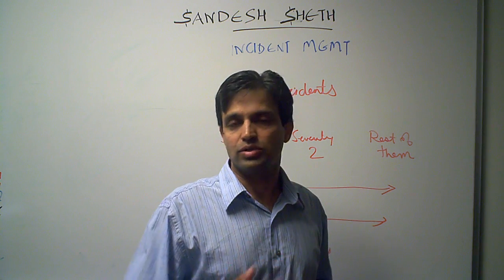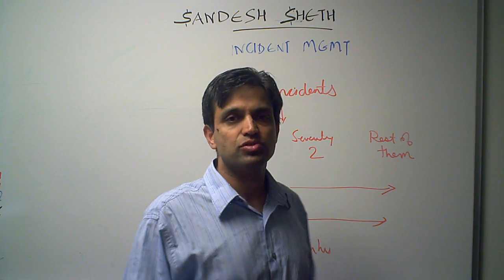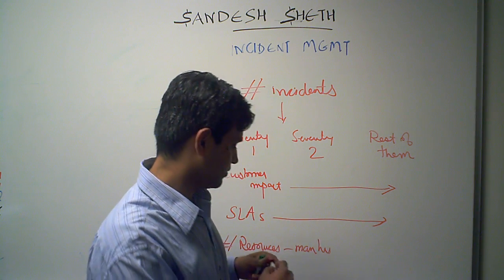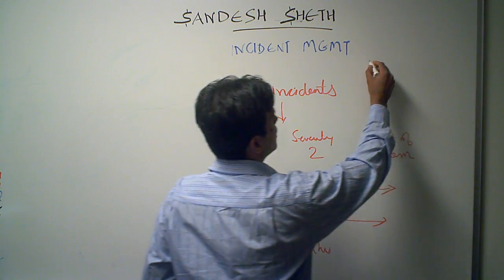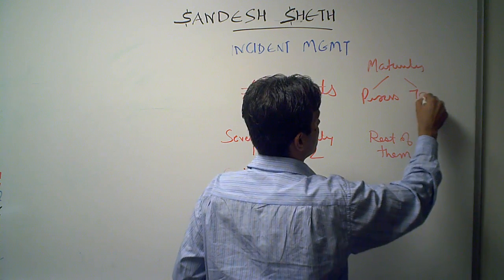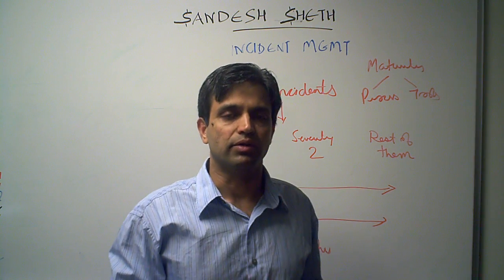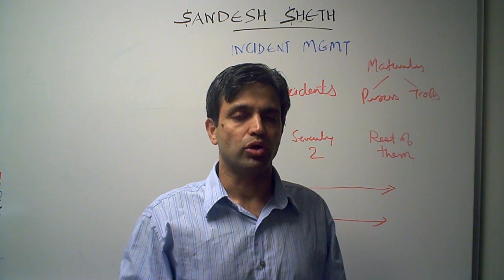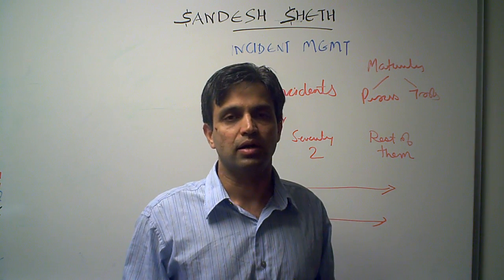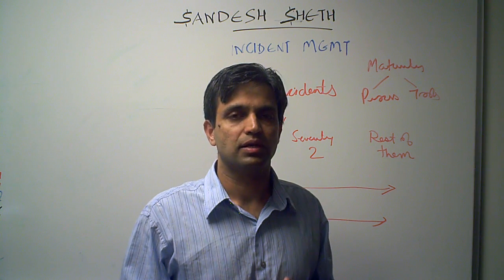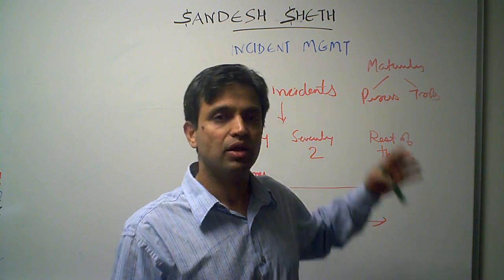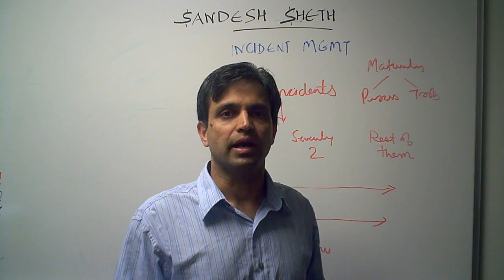In addition to this, what is common across all processes is: what is the maturity of our process and the tools that we are using for incident management? So these are the various operational metrics that we need to monitor and measure. Based on these metrics, we can define our key performance indicators — the KPIs and KGIs — and derive an overall maturity level for our process. Thank you for listening.